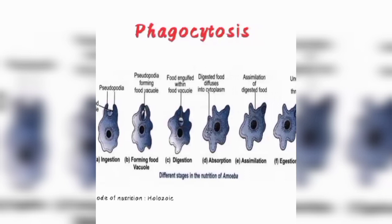Whenever there is a food particle, such as bacteria, the amoeba forms pseudopodia — finger-like temporary projections — and tries to engulf that food particle. The amoeba engulfs the food particle along with the surrounding water, and the food becomes enclosed in water, forming what is called a food vacuole. We can call this food vacuole a temporary stomach.